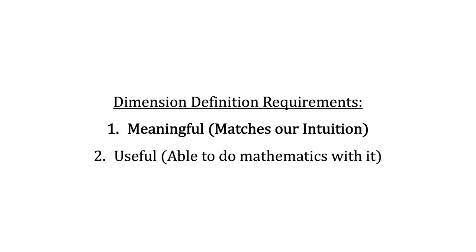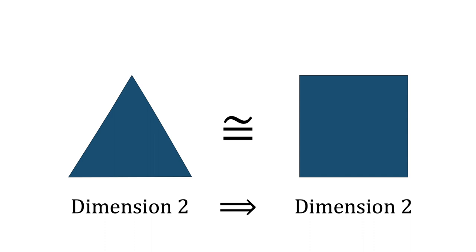Now I want to be clear that I have not actually proven the Lebesgue covering dimension of any object — we haven't shown that a line is one dimension, for example. Now the question is whether this definition is useful, something we can do mathematics with. What we want to see is that if two objects are homeomorphic, then they should have the same Lebesgue covering dimension. Here's a quick taste to see why this is actually the case.